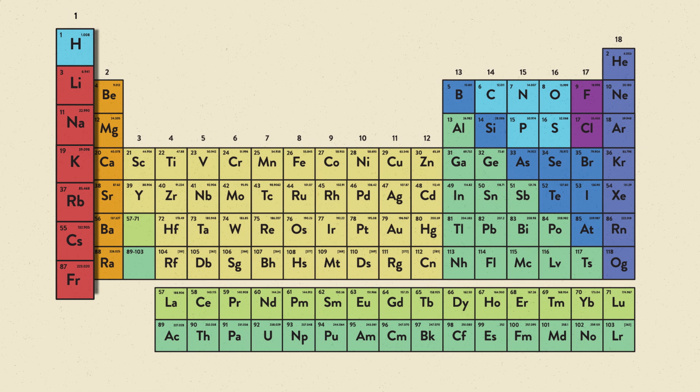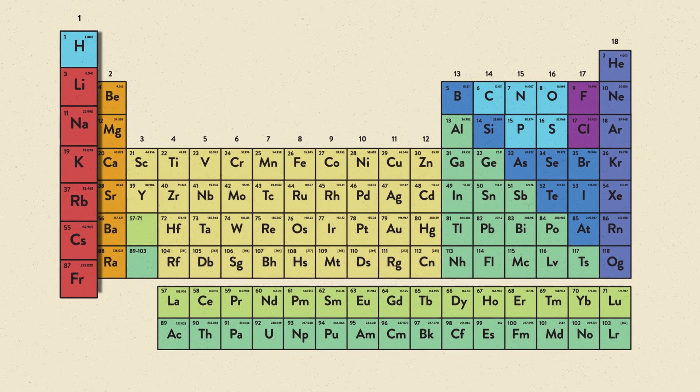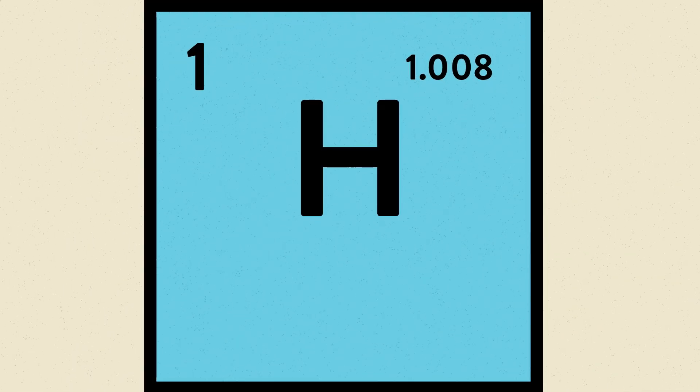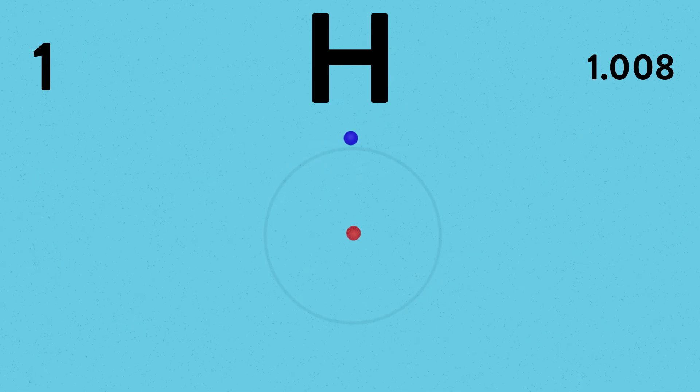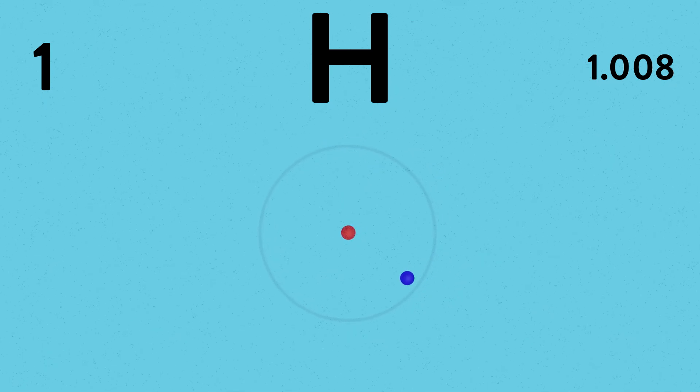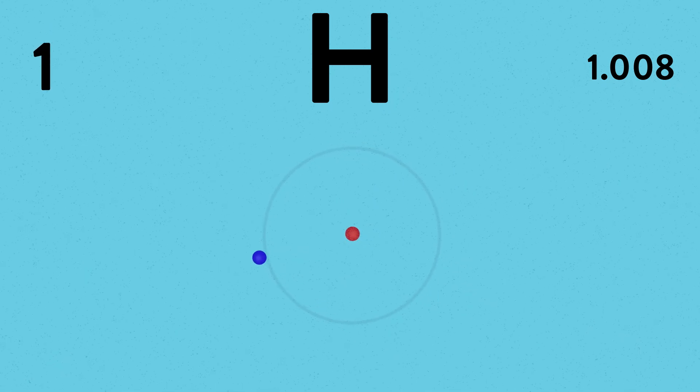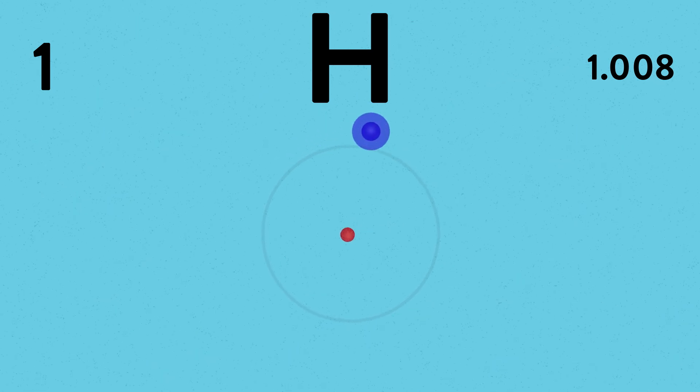Hydrogen is in the first period, which means it has one electron shell. Its atomic number is 1, which means a neutral atom of hydrogen has one electron.